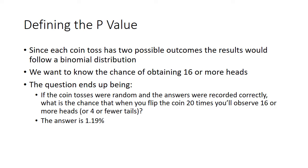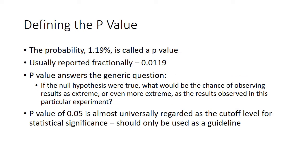The question becomes: if the coin tosses are random and the answers were reported correctly, how likely is it that if you were to flip the coin 20 times you'd observe 16 or more heads? Another way to say this: what are the chances of getting four or fewer tails? The answer is you would expect this to happen 1.19% of the time. So the likelihood of getting a value at least that extreme — 16 or more heads — is 1.19%. We call this a p-value: 1.19%, or written as 0.0119. The p-value answers the question: if the null hypothesis were true and we expect a 50-50 chance of heads or tails, what is the chance of observing results as extreme or more extreme than 16 heads in this particular experiment?